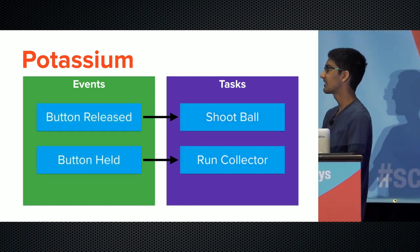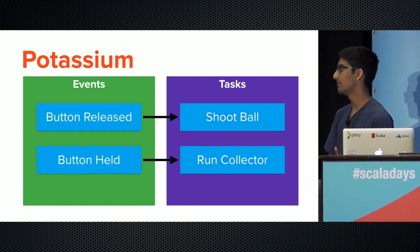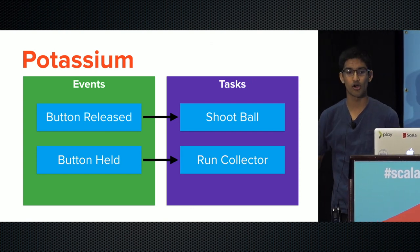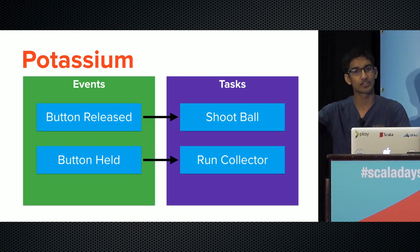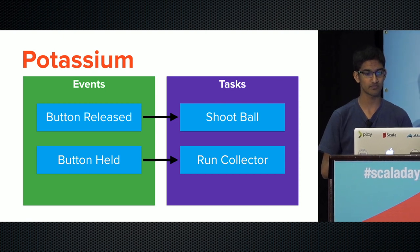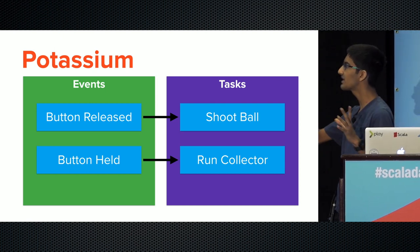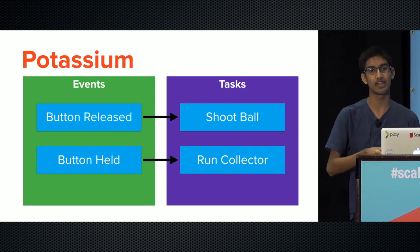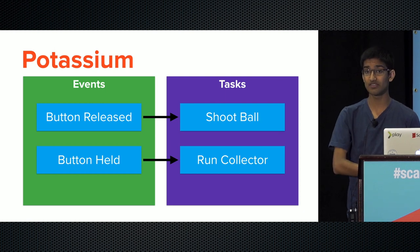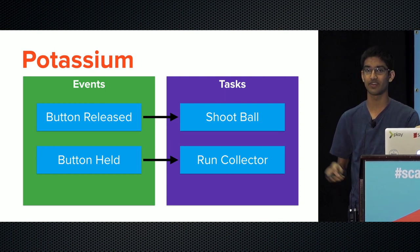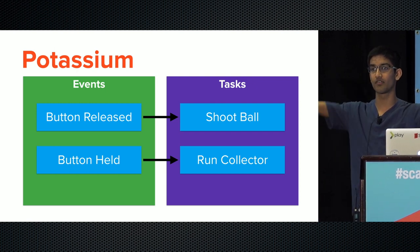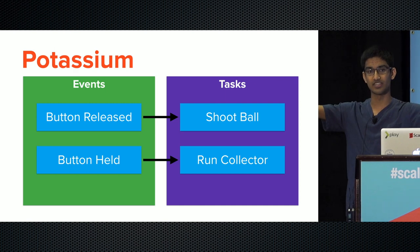In our robot, an impulse event could be a button being released, which maps to shooting a single ball. Something like a button being held runs the collector continuously, and when the driver lets go of the button, it stops collecting. You can also transform continuous and impulse events into each other: a continuous event can be converted into impulse events at its start and end, and conversely, the period between two impulse events can define a continuous event.